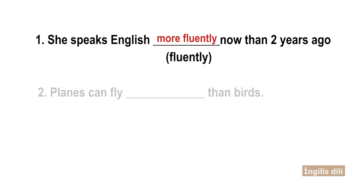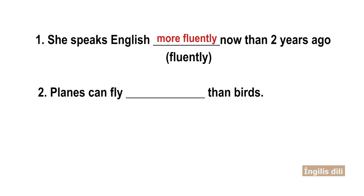The second sentence is: 'Planes can fly ___ than birds.' The word is 'highly.' The correct answer is 'more highly.' Planes can fly more highly than birds.